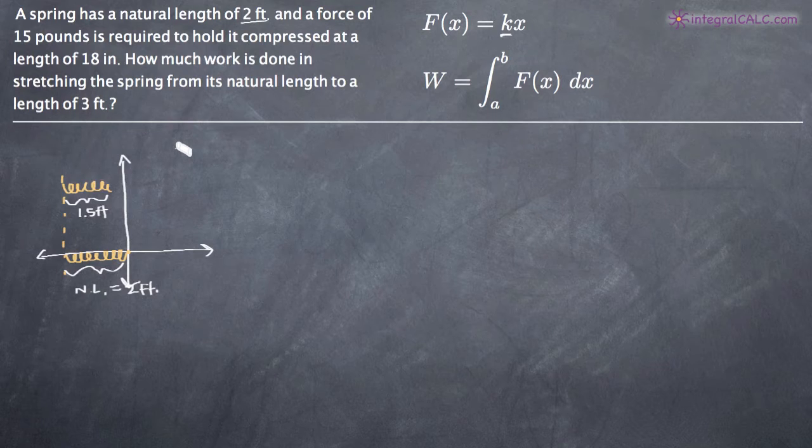And because we're compressing the spring and therefore it's moving to the left, the force that we use is going to be negative 15 foot pounds. So because it's 15 pounds and we're dealing with feet here in this problem, it's negative 15 foot pounds to move it to the left.